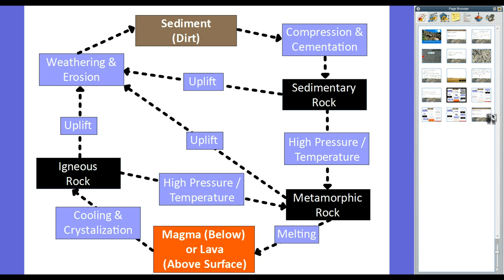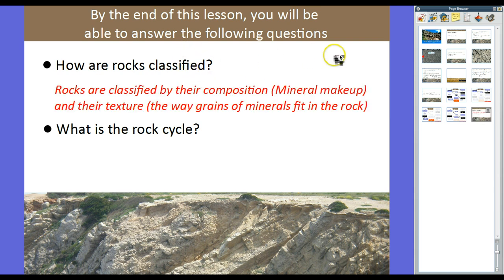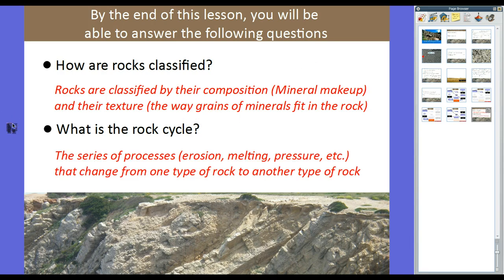This lesson is just about done. By the end of it, you should be able to answer: How are rocks classified? Rocks are classified by their composition — the mineral makeup of the rock — and their texture, or the way grains of minerals fit together. What is the rock cycle? The rock cycle is a series of processes — erosion, melting, pressure — that change one type of rock into another. Study the charts for each rock type individually, then understand how they work together. Copies of these notes and your homework worksheets are on Blackboard. If you have any questions, feel free to ask.